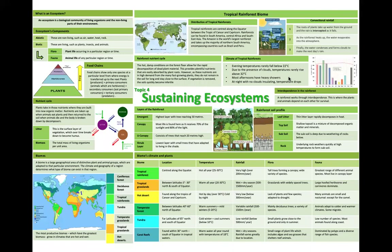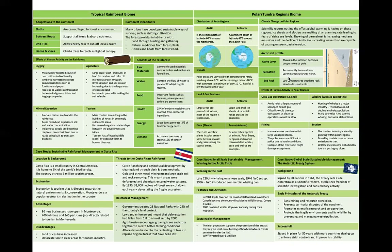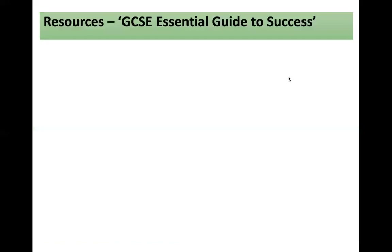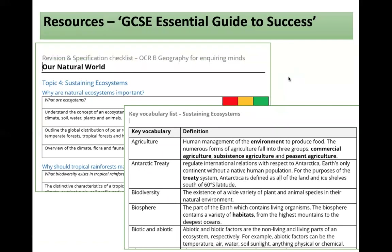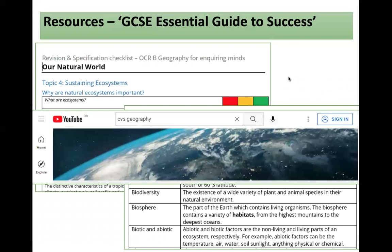We have finally come to the end. I want to draw your attention to your knowledge organizer, which you will find in your folder — GCSE Essential Guide to Success. It summarizes all those key ideas on two A3 sheets, and can be found in that section on Teams or on the school network. Alongside it, you will find a checklist of your whole specification where you can red, amber, green how well you are doing with your revision. There's also a key vocab list on sustaining ecosystems to learn the key terms — that really specific tier-three vocabulary that you need especially for your case study questions. You can also go back and watch this video again on our YouTube channel, CVS Geography. Thank you for watching.